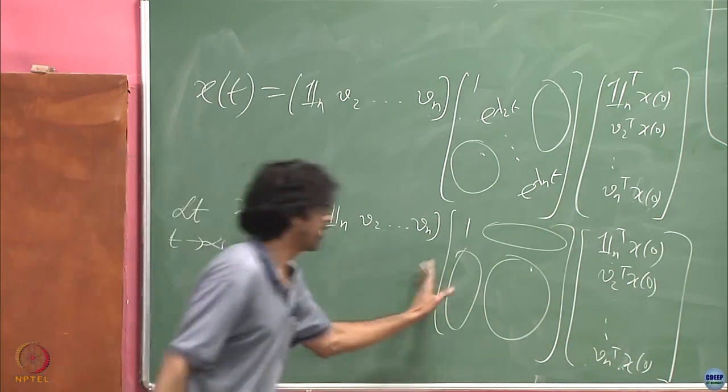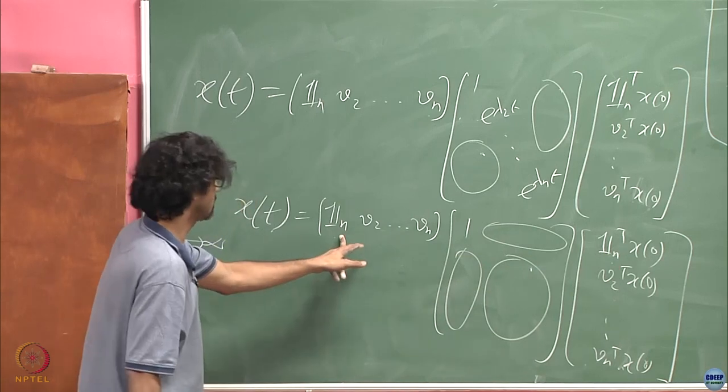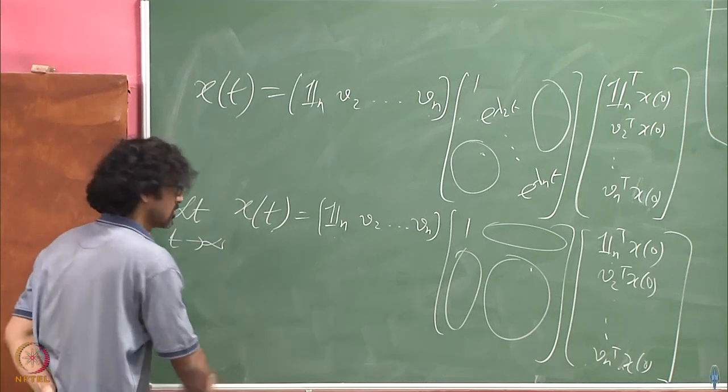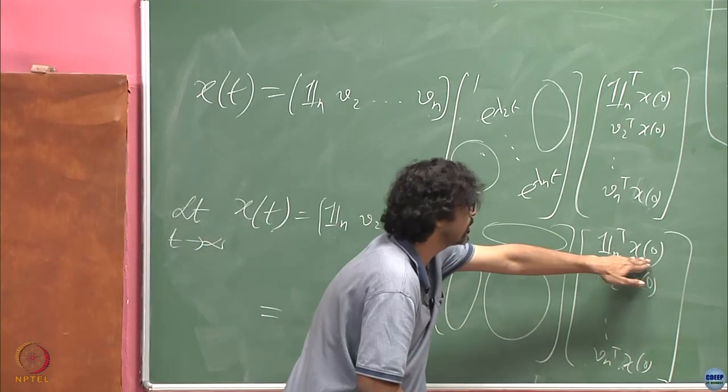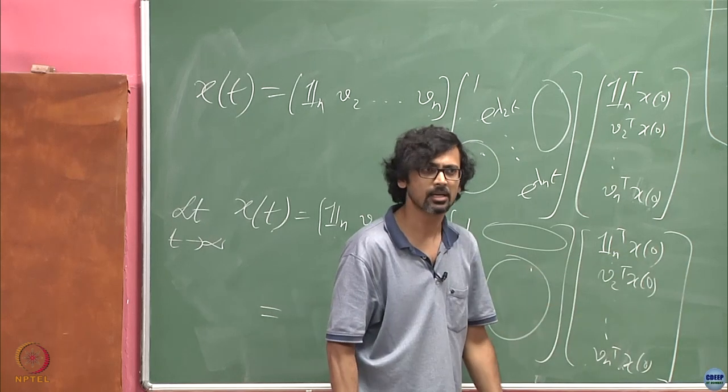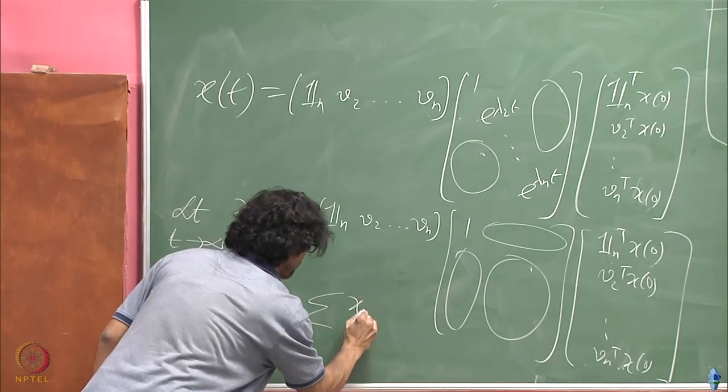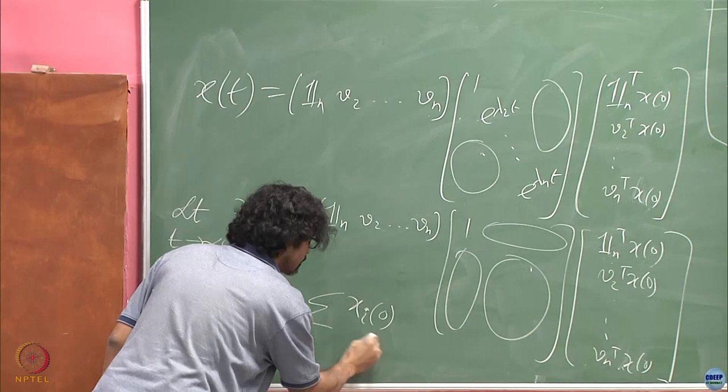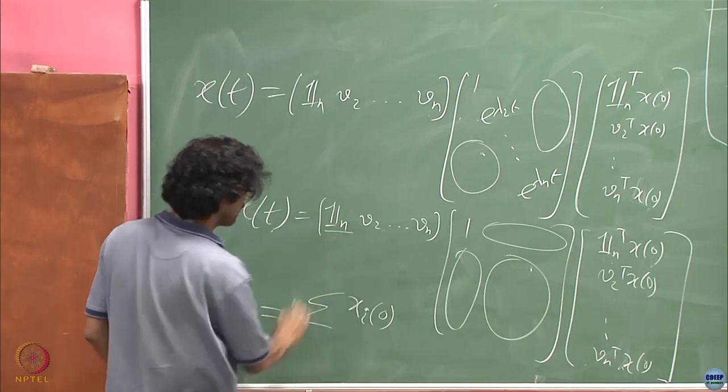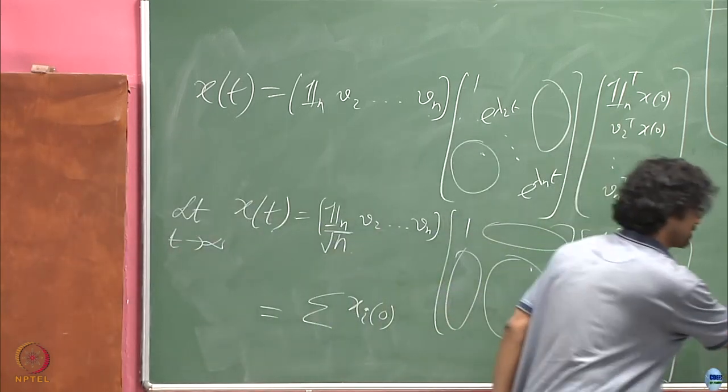And what is this? This is just [all ones transpose X_0, V_2 transpose X_0, until V_n transpose X_0]. Agreed? So as t tends to infinity, that is the asymptotic behavior of the system, what happens to x(t)? What happens to all of these fellows as t tends to infinity? What do we know the Laplacian to be? Positive semi-definite. Only one eigenvalue is 0, the others are all positive. What do we know about the eigenvalues of minus Laplacian then? Exactly one 0, all others are negative. So these lambdas are all negative. As t tends to infinity each of these degenerates to 0.